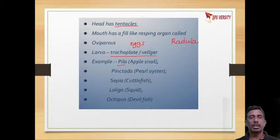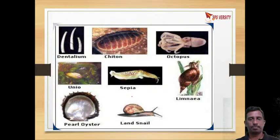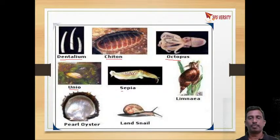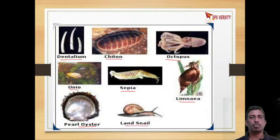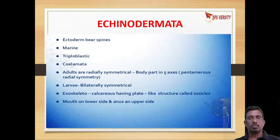Examples of molluscans are Pila, Pinctada, Sepia, Loligo, and Octopus. This is about the phylum Mollusca.